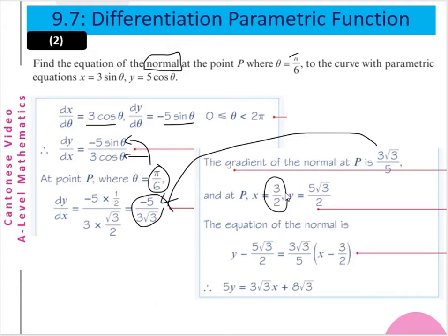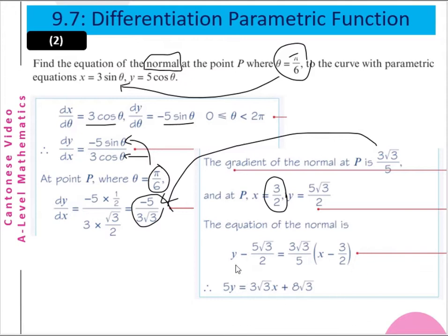We get x equals 3/2 by substituting θ equals π/6 into the x equation, and y equals 5√3/2. Using the point-slope form, we get the equation of the normal. It is y minus the y-coordinate equals the slope multiplied by x minus the x-coordinate. So the equation is 5y equals 3√3·x plus 8√3. This is the equation of the normal at point P.